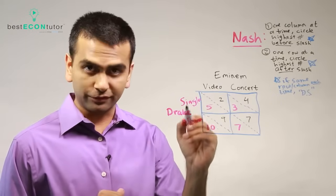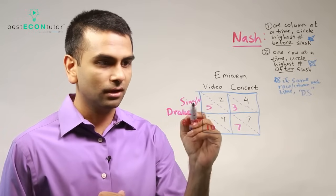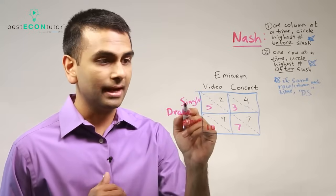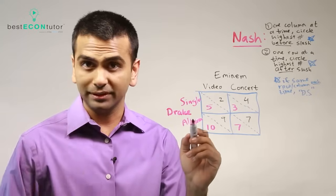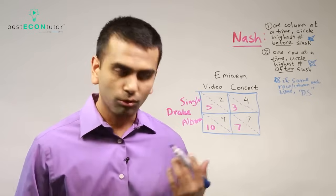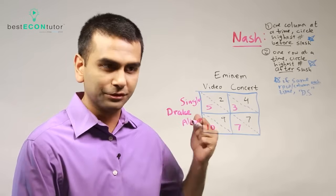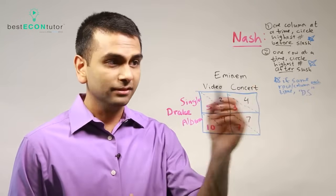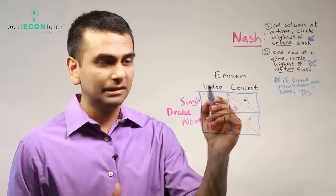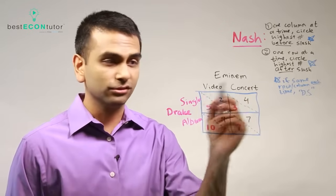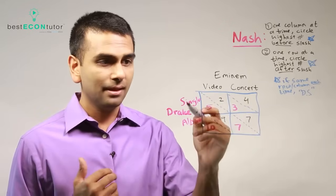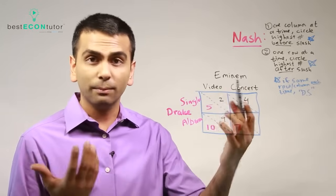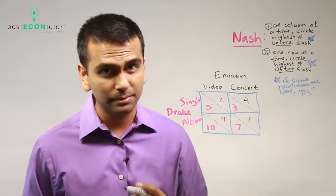The two words over here next to Drake are called strategies. Drake can either release a single or release an album - those are his two options. Eminem's two strategy choices are he can make a video or he can do a concert. Notice that they don't have to be the same options, but they certainly can be. Most examples you'll see will probably have the same options, but they don't have to be by any means.